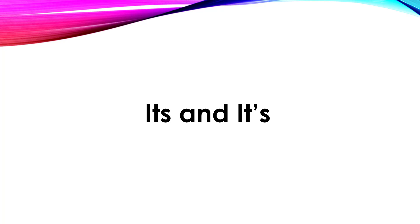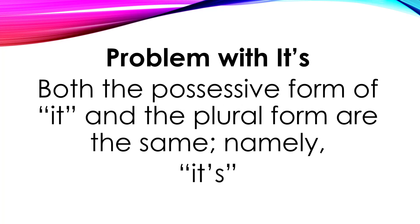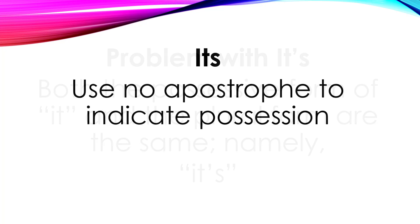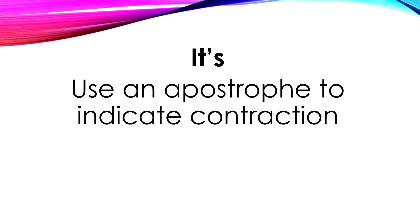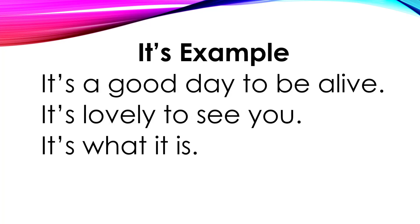There's 'its' and 'it's.' The problem is that both the possessive form of 'it' and the contraction form of 'it' are written the same way — namely, it apostrophe S. So how are we going to clarify between possessive and the contraction? We use no apostrophe to indicate possession: 'its.' Give to it its due — that's a possessive example. And then we use an apostrophe to indicate contraction, as in 'it's a good day to be alive,' 'it's lovely to see you,' 'it's what it is.' So apostrophe for contraction and no apostrophe for possession.